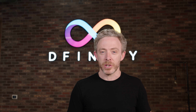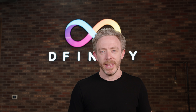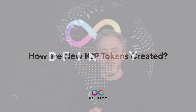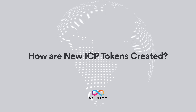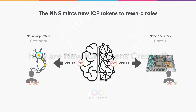Since ICP is so important, our first question must be how are new ICP created? The network nervous system mints new ICP tokens to reward different roles that those supporting the network can play. It grants rewards to those running voting neurons in the form of voting rewards, and to those operating correctly functioning node machines in the form of node rewards.